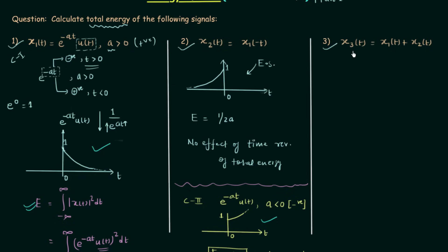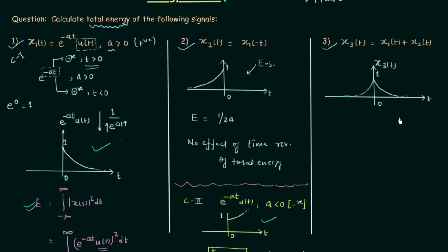In the third problem, signal x3(t) equals x1(t) plus x2(t). Adding the two graphs, the waveform of x3(t) is symmetric with identical left and right sides, and equals 1 at t equals 0. There is a property: when you add two signals, their energies add. Energy of x1(t) is 1 by 2a, energy of x2(t) is 1 by 2a, so energy of x3(t) equals 1 by 2a plus 1 by 2a, which equals 1 by a.